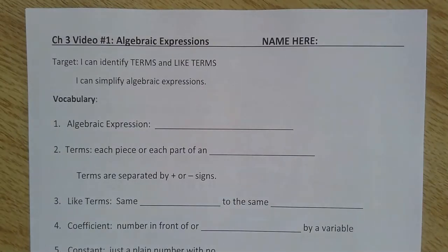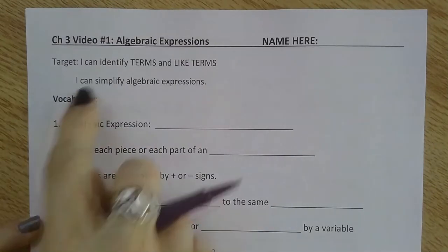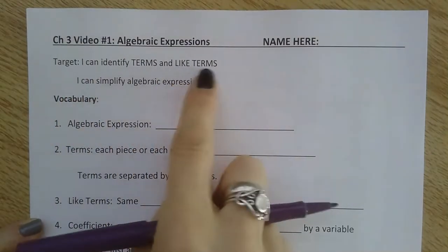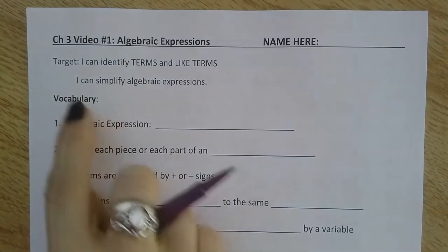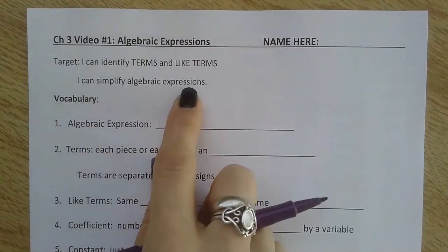Here we go with video one for chapter three. In this section, we're going to identify terms and like terms, go over some different vocab words, and be able to simplify algebraic expressions.